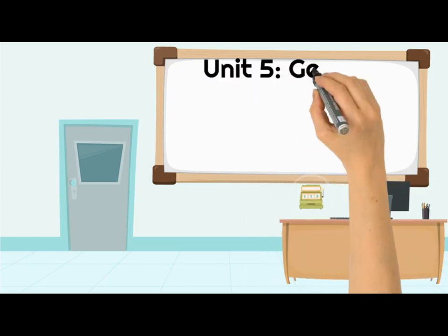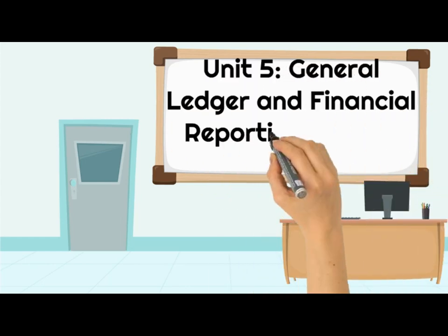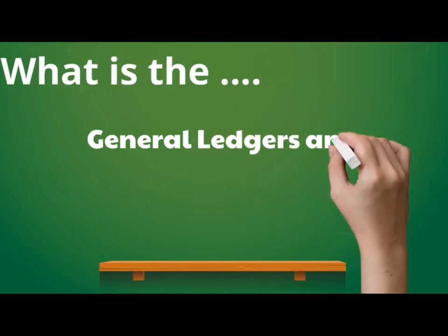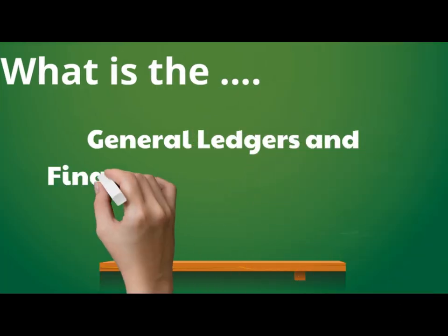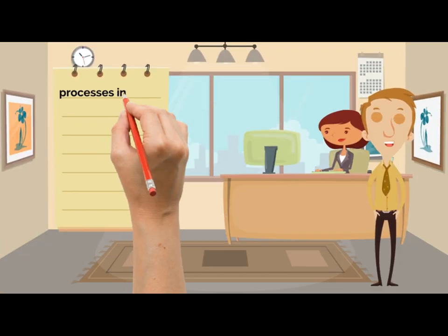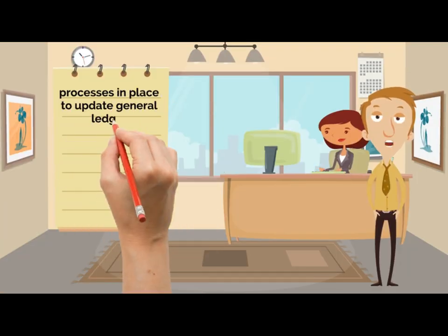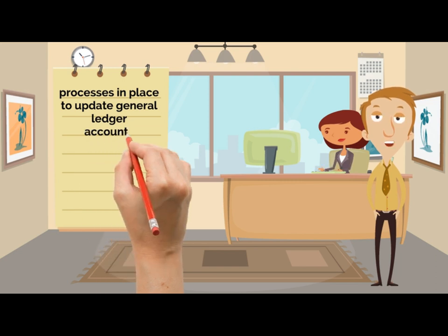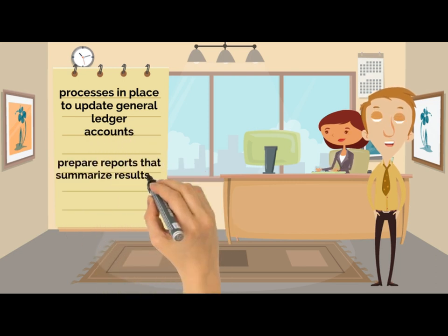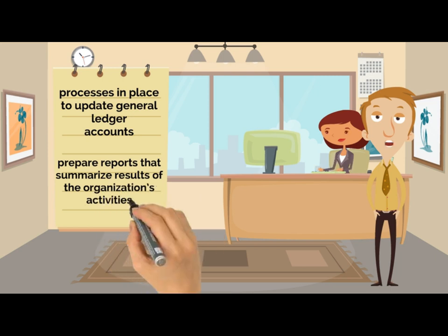Hello. Today we're going to talk about the General Ledger and Financial Reporting System. The General Ledger and Reporting System is a system that includes the processes in place to update General Ledger accounts and prepare reports that summarize results of the organization's activities.